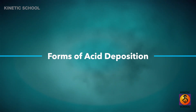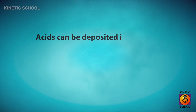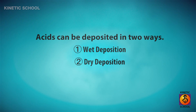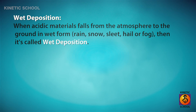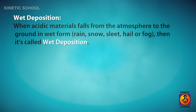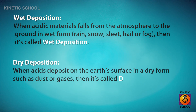Forms of acid deposition. Acids can be deposited in two ways: wet deposition and dry deposition. When acidic materials fall from the atmosphere to the ground in wet form — such as rain, snow, sleet, hail, or fog — then it's called wet deposition. On the other hand, when acids deposit on the earth's surface in a dry form such as dust or gases, then it's called dry deposition.